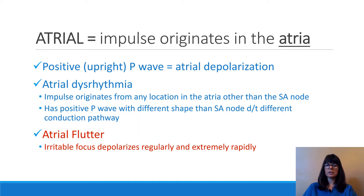It does have a positive P wave because it comes from the atria, but it might have a different shape than the usual impulse that comes from the SA node, because of this different conduction pathway the conduction is now taking due to this irritable focus being located in a different spot than the SA node.